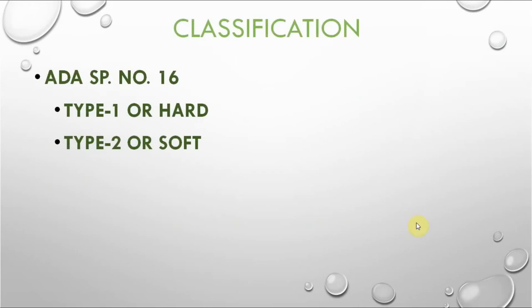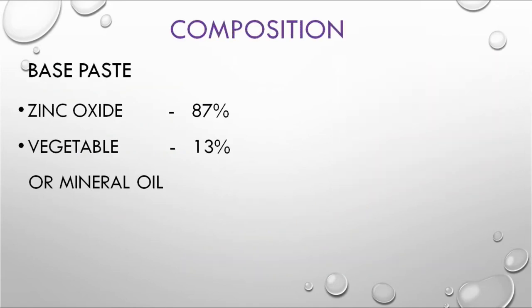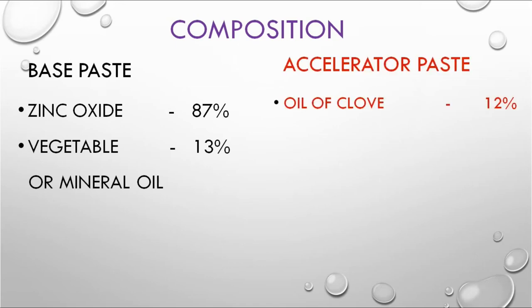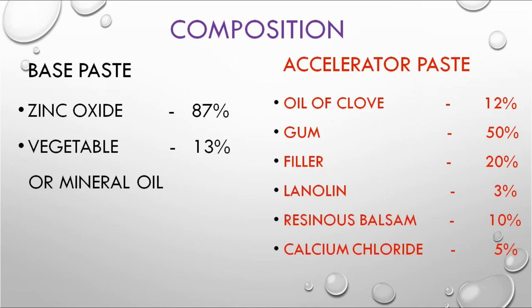Classification of ZOE (important viva point): ADA specification number is 16. Type 1 is hard, Type 2 is soft. Available as a two-paste system — base paste (white) and accelerator/catalyst paste (red). Composition: base paste contains zinc oxide 87% and vegetable or mineral oil 13%; accelerator paste contains clove oil 12%, gum 50%, filler 20%, and others including lanoline, resinous balsam, calcium chloride, and color.